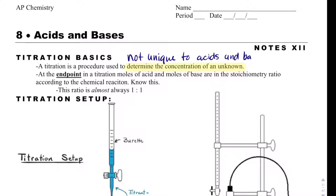You may remember earlier in the year we did something called a redox titration. Basically, all that we are doing with a titration is reaching the end point. If we set up the titration well, at the end point there is going to be a color change, and that is when we are done. That is where our moles of acid and moles of base are in their stoichiometry ratio. With acids and bases, that ratio is almost always 1 to 1.